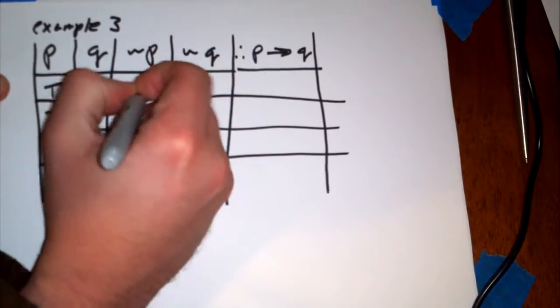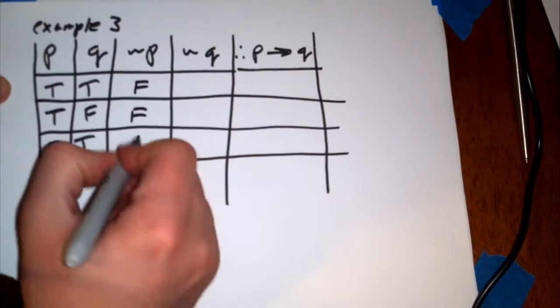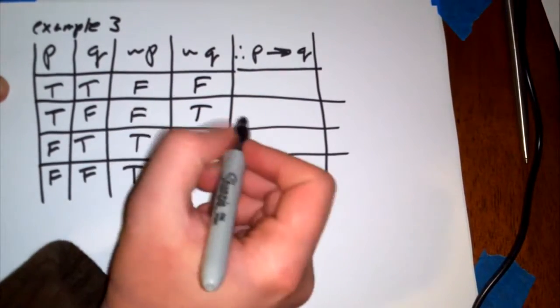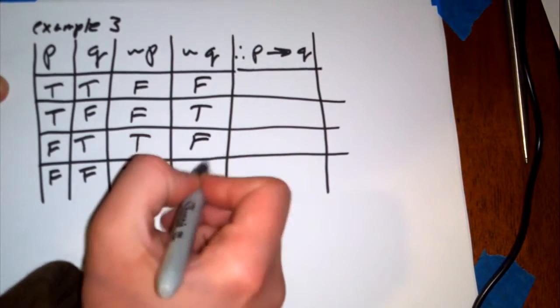Let's go ahead and fill in these two from previous knowledge. These are the opposites of the statements. So, false, false, true, true, false, true, false, true.